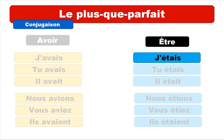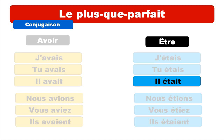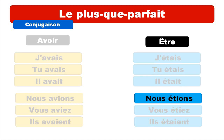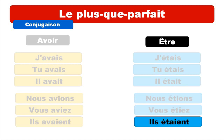And then for être at the imparfait: j'étais, tu étais, il était, nous étions, vous étiez, ils étaient.